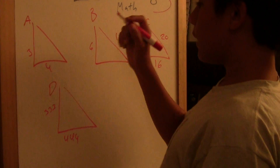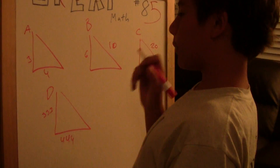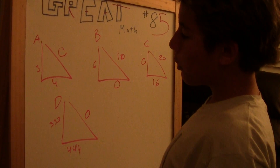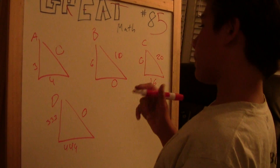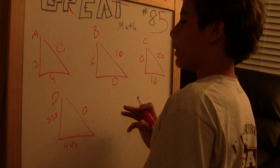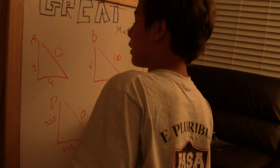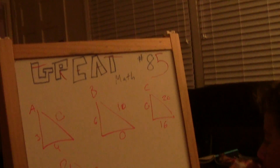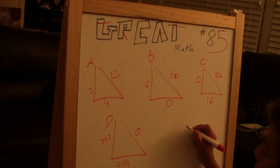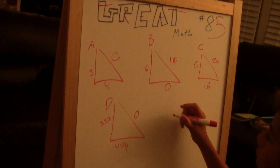I'm trying to find the missing length — this one, this one, this one, and this one. We will use the Pythagorean theorem, which we've learned before, but this way we make it clearer and we will see a pattern that I will reveal later.